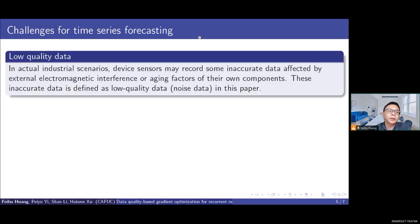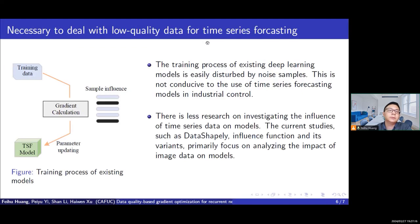However, in actual industrial scenarios, device sensors may record some inaccurate data. This inaccurate data is defined as the low-quality data in this paper. We think it is necessary to deal with low-quality data for time-series forecasting.